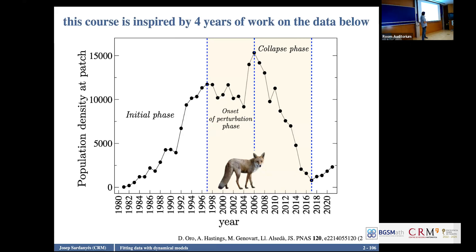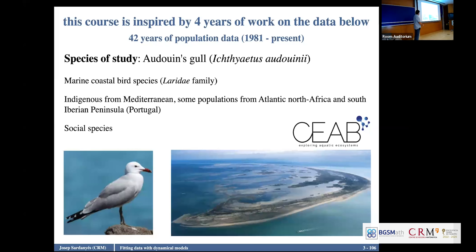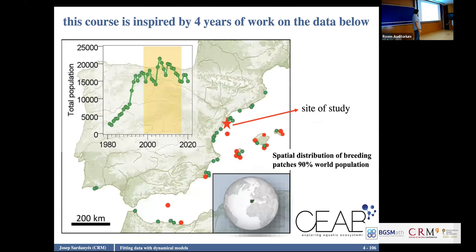So what should we use here — a time-continuous or discrete-continuous model? This is a population of birds. This is a marine coastal bird, mainly indigenous to the Mediterranean, North Atlantic, and south of Portugal. It is a very social species that forms colonies. This is called a metapopulation — a population fragmented into different patches that are not physically connected but are close enough to be connected by processes of dispersal or colonization.